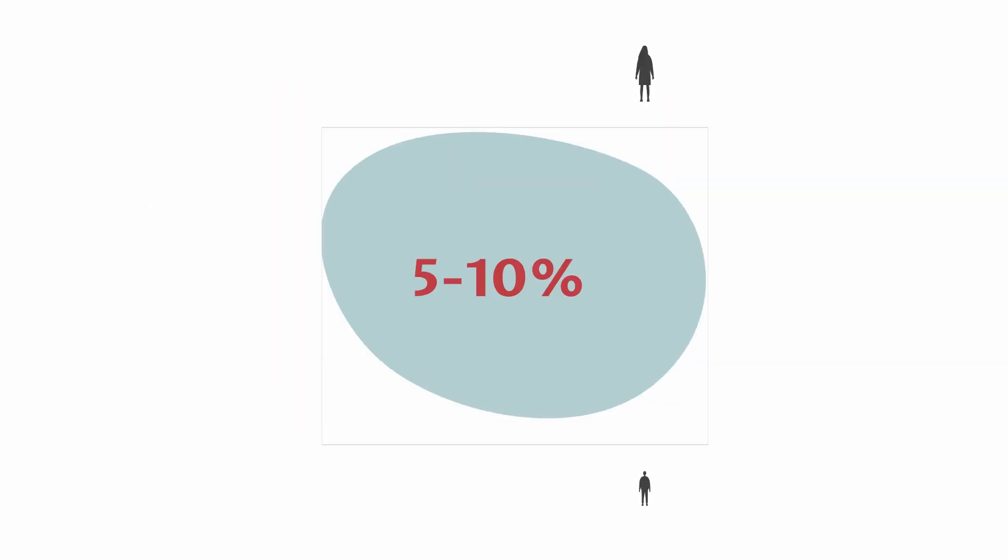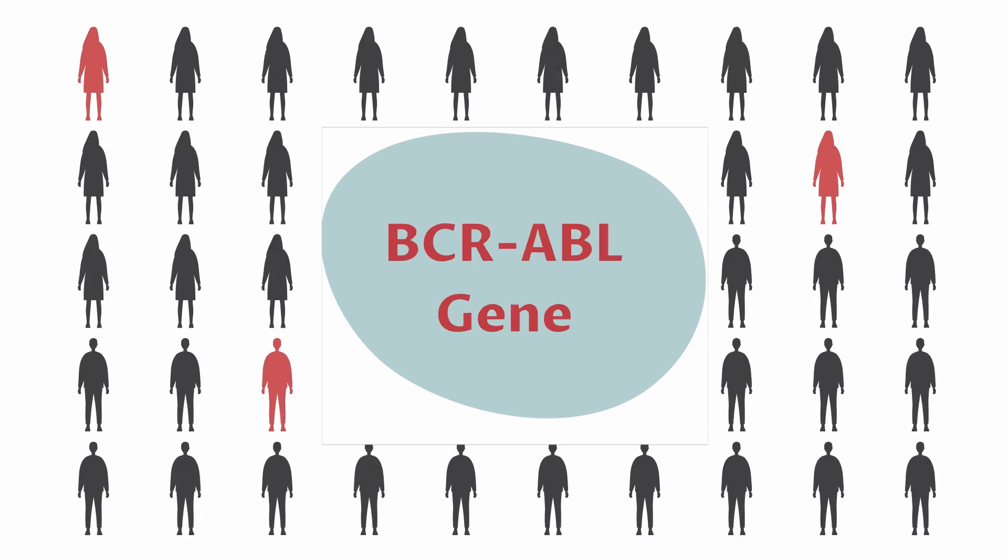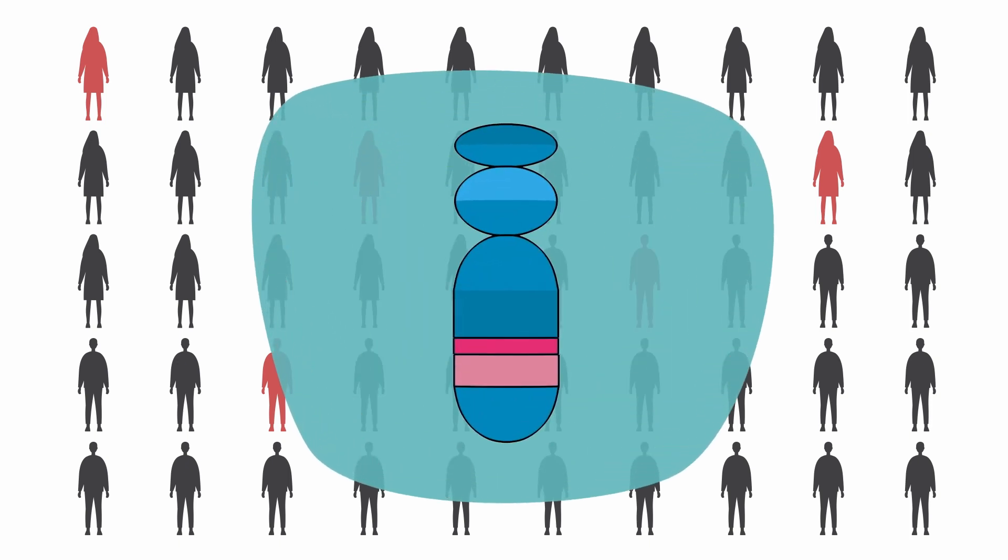In a very small number of CML cases, the BCR-ABL gene is present, but not the Philadelphia chromosome. It's unclear why this happens.